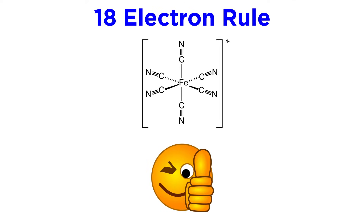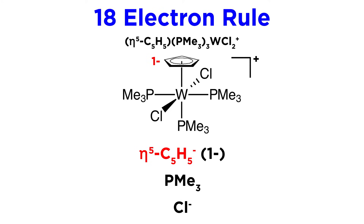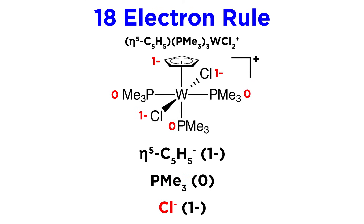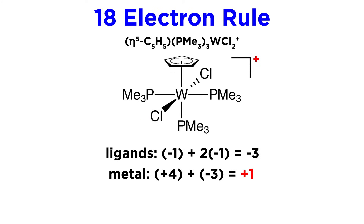Now this one was pretty easy, but don't forget that we have all those polydentate and polyhapto ligands, so this can get a little trickier. Let's try another example. Here we have a tungsten center, a cyclopentadienyl anion, three trimethylphosphines, and two chlorides, with an overall charge of one plus. We must know that the cyclopentadienyl ligand is an anion with a one minus charge. The phosphines are neutral, and the chloride ligands have a negative charge as well. Adding up the charges on the ligands, we get a total of three minus. The charge on the complex is one plus, so the oxidation state on tungsten must be plus four, since four plus negative three equals one.